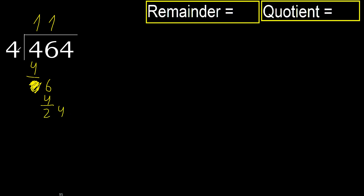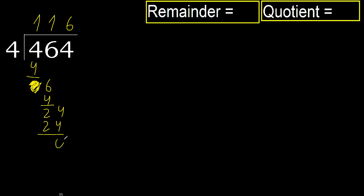24. 4 multiplied by 6 is 24 — not greater. Subtract, 0. Next, there is no number, therefore finish it.